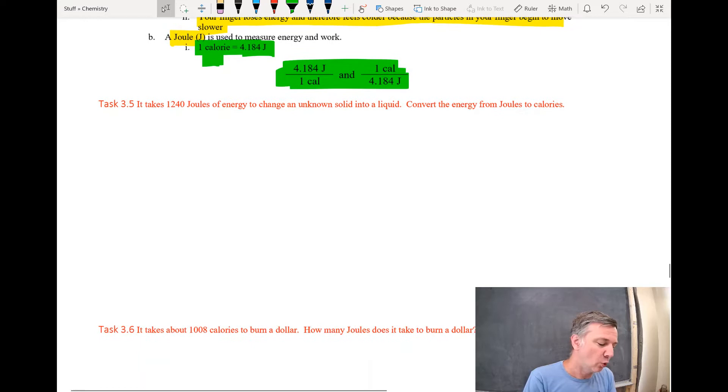Task 3.5 says it takes 1,240 joules of energy to change an unknown solid into a liquid. Convert the energy from joules to calories. We learned in the last video that this right here is the conversion factor between calories and joules. That says factor, you can't read that. Let's try to write legibly. F-A-C-T-O-R. There you go.